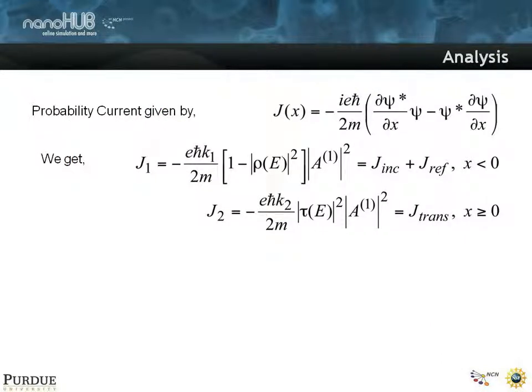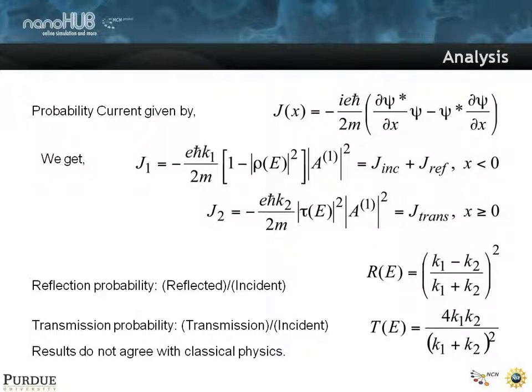You can also define a probability current, which is proportional to the wave and the differential of the wave in a Hermitian conjugate fashion. You can identify current as being an incident current and a reflected current, and a transmitted current that is proportional to the transmission coefficient squared. You can define reflection and transmission coefficients that are solely dependent on the momenta that are determined by these regions of space.